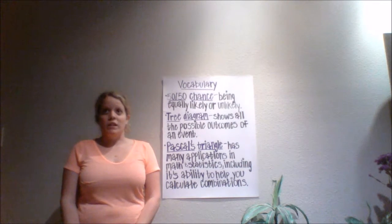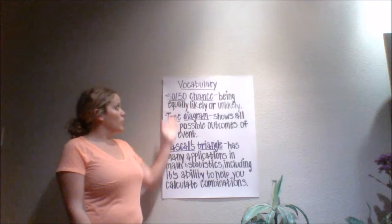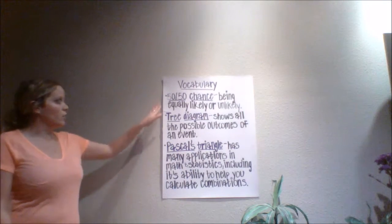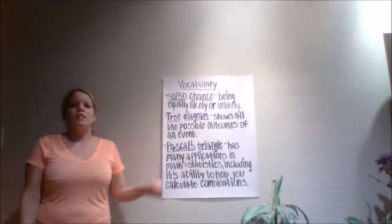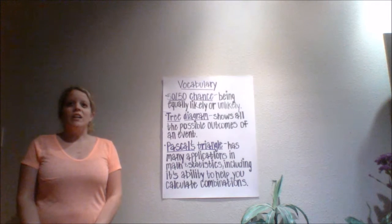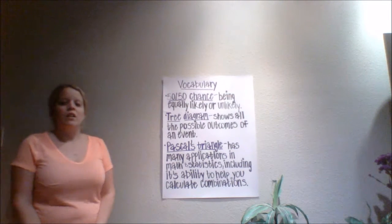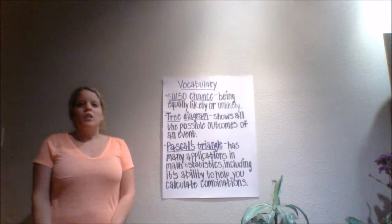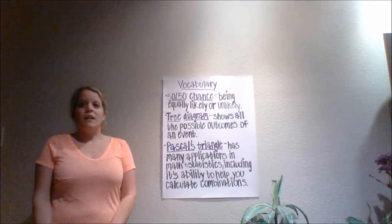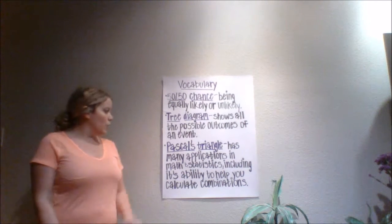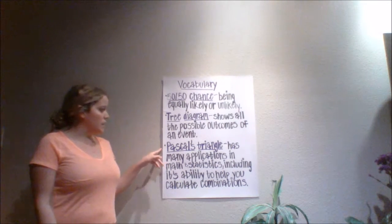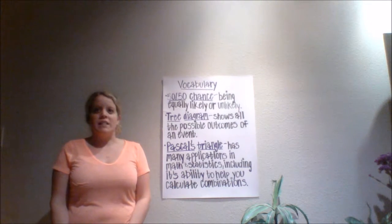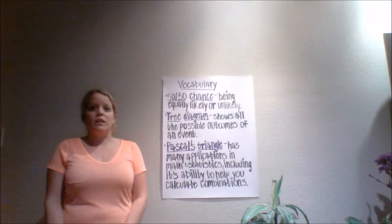Here are a couple of words that we're going to learn in our vocabulary. The first one is 50-50 chance — it means being equally likely or unlikely. The second word is tree diagram, which shows all the possible outcomes of an event. And the third one is Pascal's triangle, which has many applications in math and statistics, including its ability to help you calculate combinations.